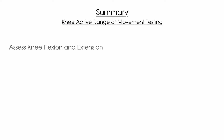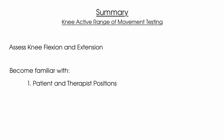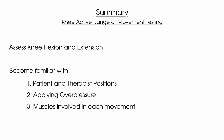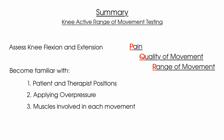To summarize this video on active range of movement of the knee joint: complete your assessment by looking at active knee flexion and extension. Make yourself familiar with the different patient and therapist positions, the method of applying overpressure, as well as the muscles involved in each active range of movement test. And when completing your active range of movement testing, look for P, Q and R — pain, quality of movement, and range of movement.